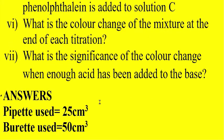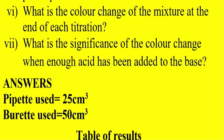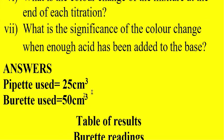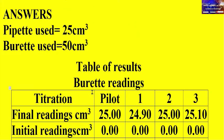Let me proceed with the answers. The pipette used is 25 milliliters, and the burette capacity is 50 milliliters — those are the volumes of the apparatus. After performing the procedure, we obtain a table of burette readings.